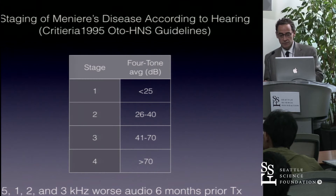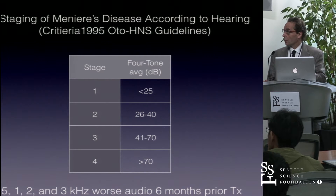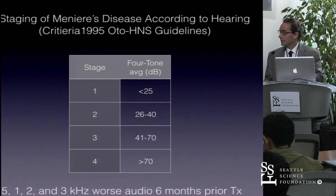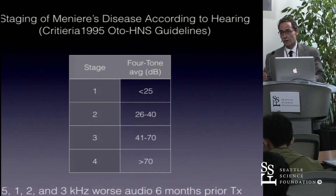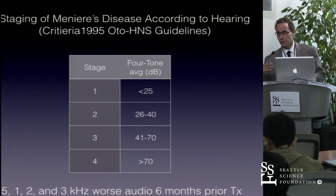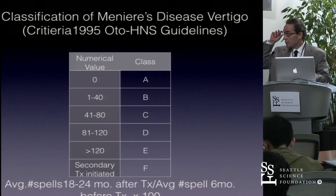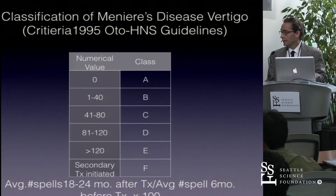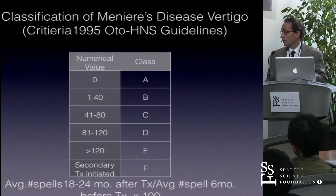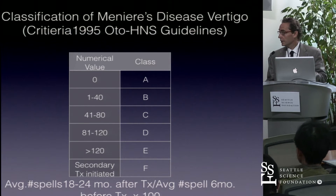Meniere's disease is staged in four stages, with four being the most severe hearing loss. It uses a four-tone average of 500, 1000, 2000, and 3000 Hz — typically the worst audiogram of the six months prior to commencing treatment, used as the baseline for comparative studies. For vertigo classification, it goes from A through F, with F being the worst. It's calculated as the number of spells in the 18 to 24 months following treatment divided by the average spells in the six months prior, multiplied by 100.